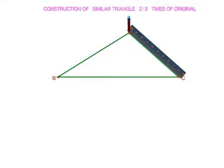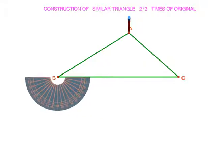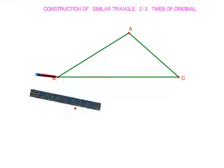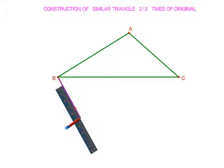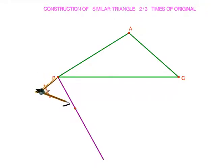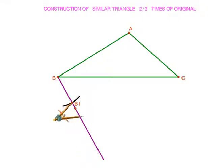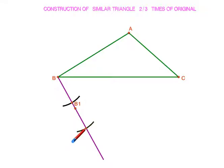Since the triangle is 2 by 3 times of the original, with B as center in anti-clockwise direction with some acute angle, draw a ray. Since the required triangle is 2 by 3 times which is smaller, divide the ray into three equal parts such that BB1 equals B1B2 equals B2B3.